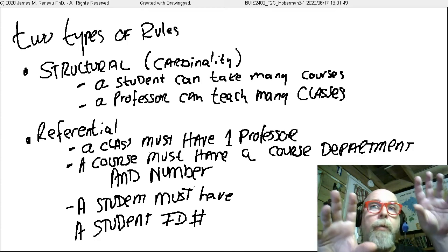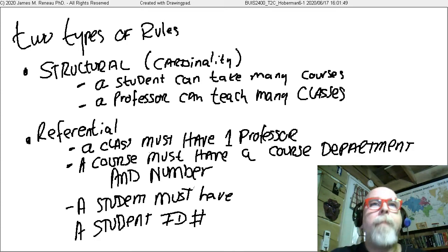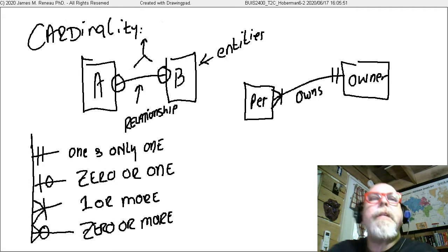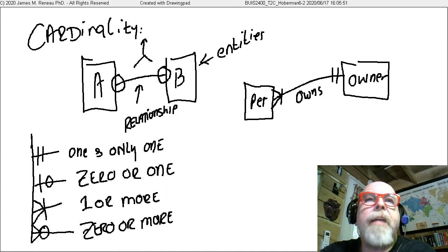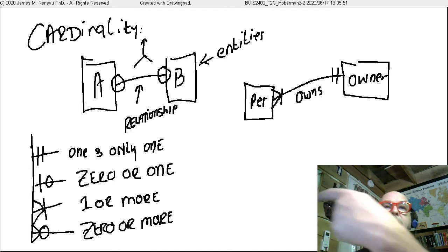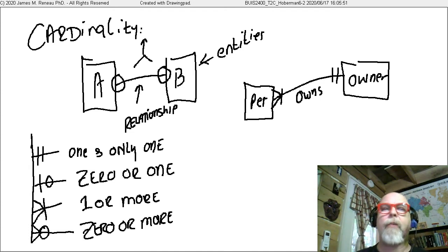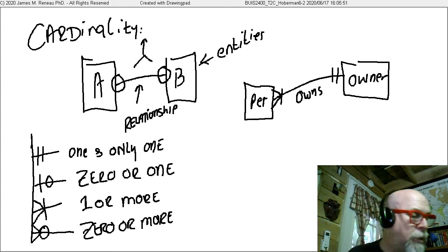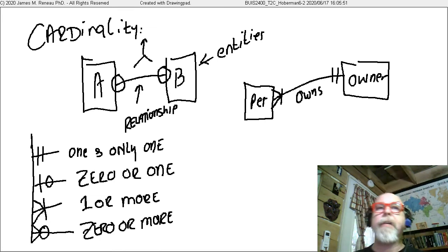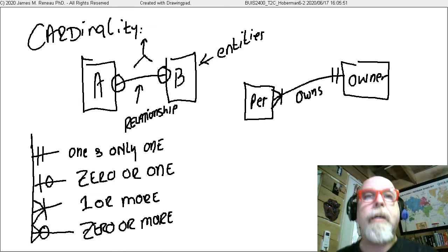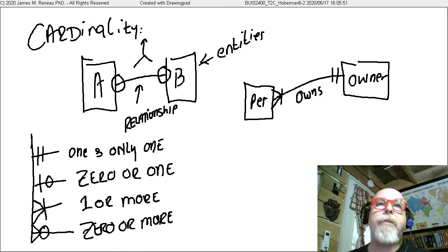So you can see that the rules deal with the entities and deal with the data elements, and then also deal with the structural relationship between entity to entity. Now, in this semester, I'm going to be using the type of data model called a crow's foot diagram. A crow's foot diagram is named for these goofy symbols you see over here in that corner of the presentation.